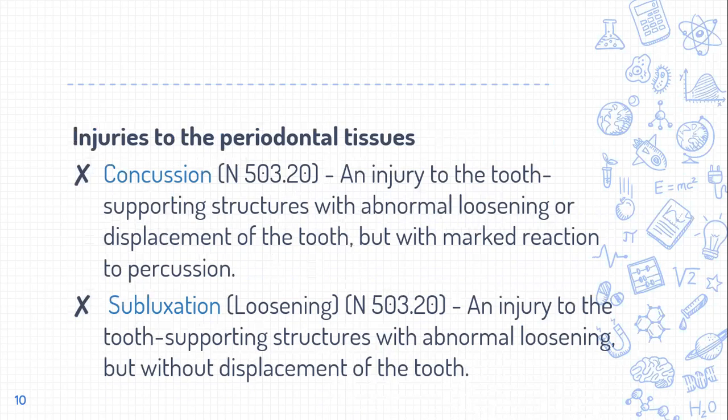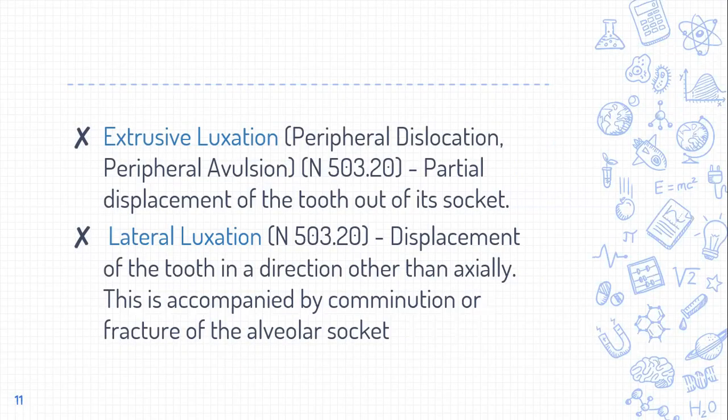Subluxation is an injury to the tooth supporting structure with abnormal loosening but without displacement of the tooth. In concussion there is no displacement, whereas in subluxation there is abnormal loosening — that is the key difference. Extrusive luxation, as the term suggests, is a partial displacement of the tooth out of the socket — compared to adjacent teeth, the tooth has come out of the socket.